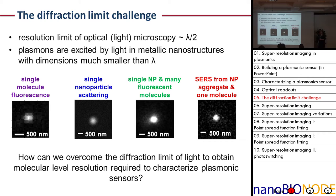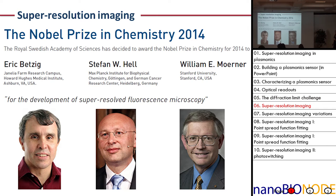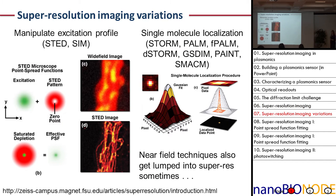What we do in my lab is think about ways to overcome this diffraction limit of light to understand the function and performance of plasmonic sensors. The good news is somebody has solved this problem. Back in 2014, these three fellows were recognized with the Nobel Prize for the development of super-resolved fluorescence microscopy, which allows you to overcome this fundamental limit and look at things at the molecular length scale. Super-resolution imaging is an umbrella term encompassing a huge variety of techniques, all with their own acronyms. Some are based on manipulating the excitation profile, such as STED - stimulated emission depletion microscopy - and structured illumination microscopy.